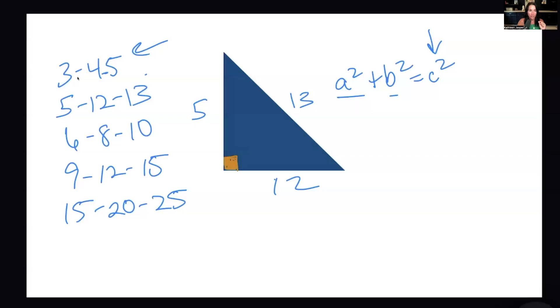Let's go over the Pythagorean triples one more time. Here they all are: 3, 4, 5 with 5 being the hypotenuse; 5, 12, 13 with 13 being the hypotenuse; 6, 8, 10 with 10 being the hypotenuse; 9, 12, 15 with 15 being the hypotenuse; and 15, 20, 25 with 25 being the hypotenuse. Write them down and get to know them.